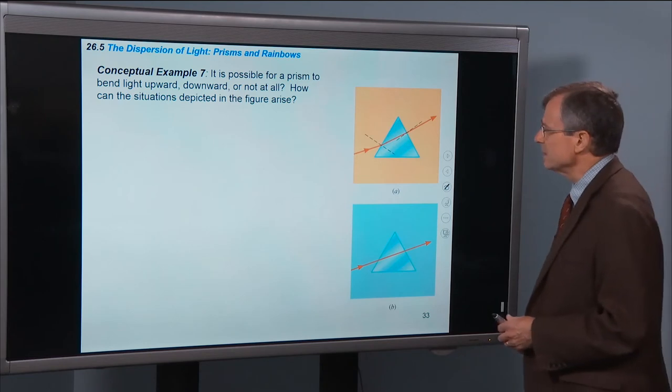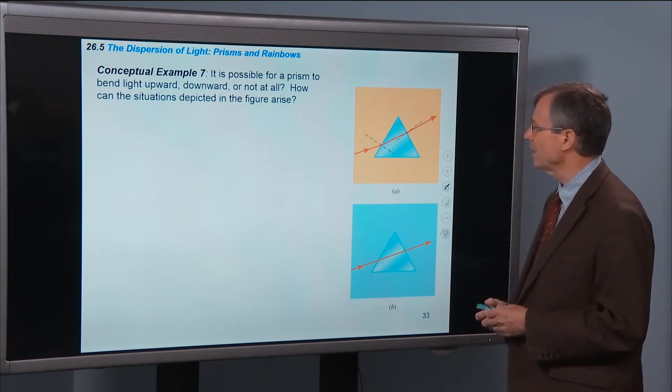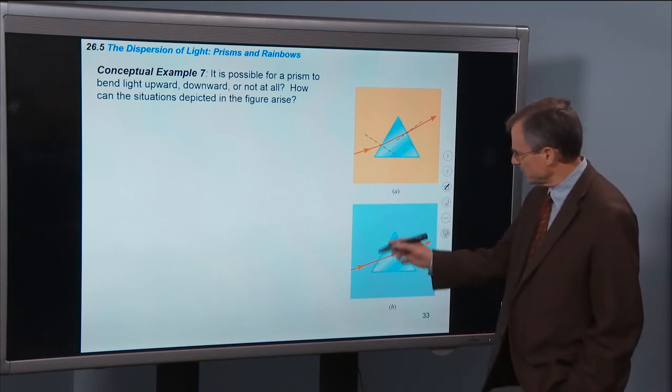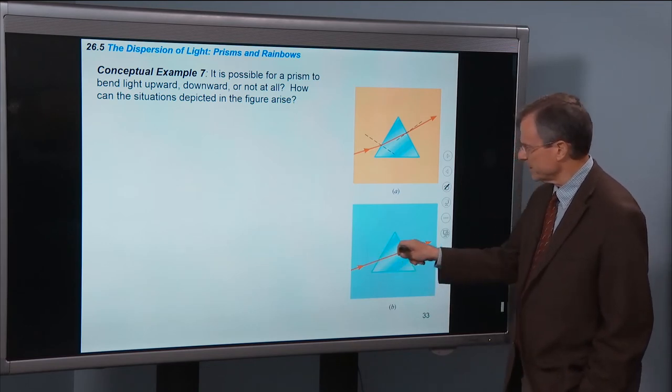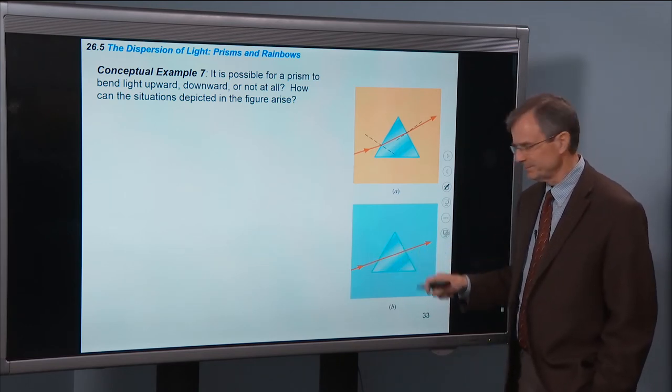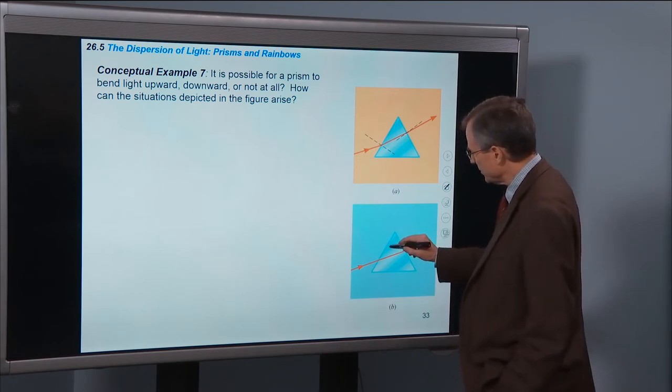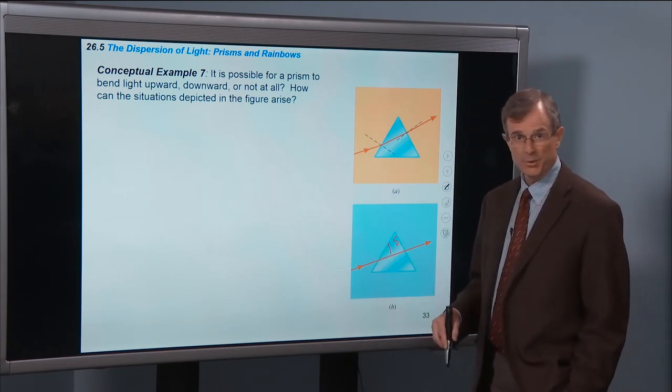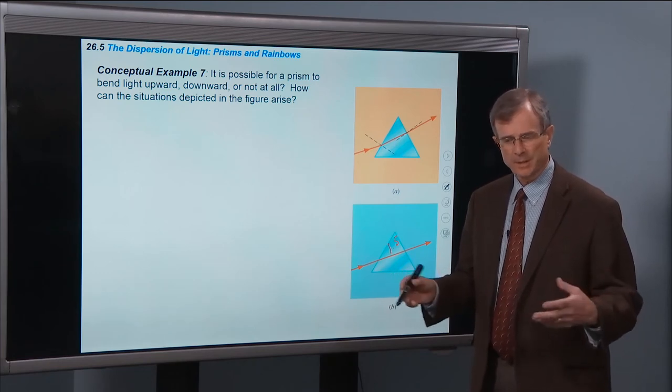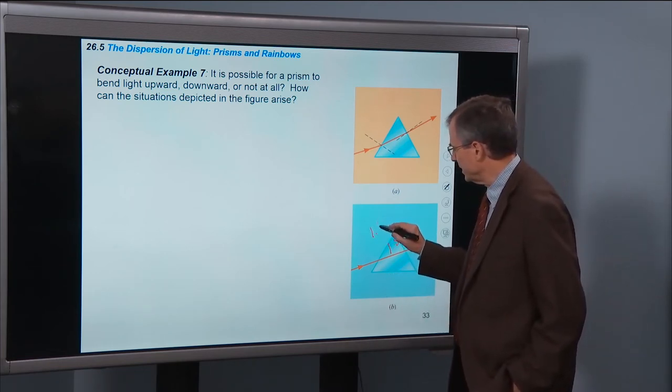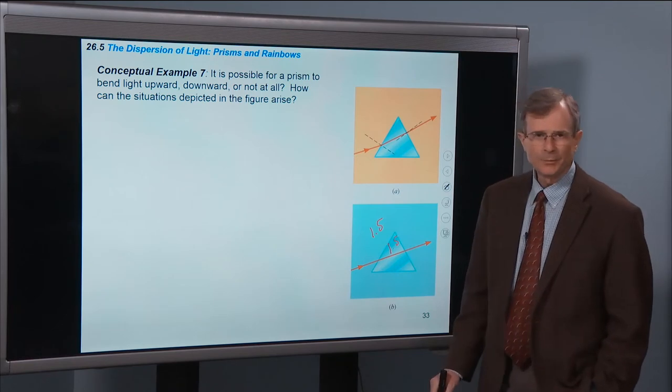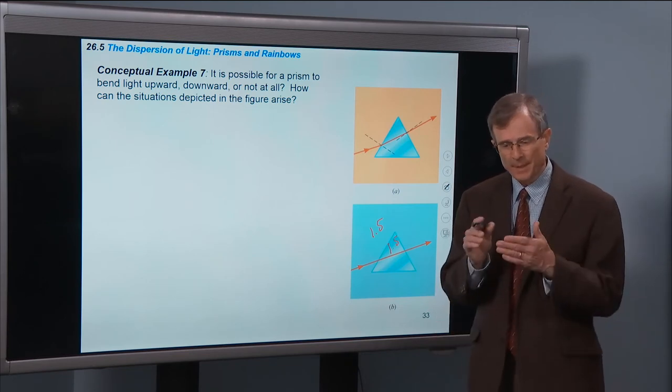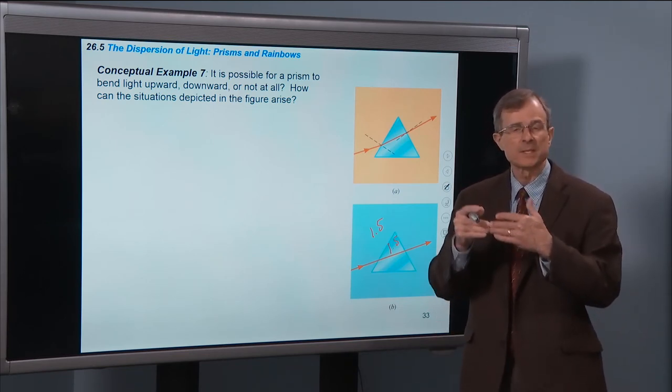So is it possible for a prism to bend light upward, downward, or not at all? And how can the situations depicted in the figure arise? What about this situation here? Is it possible for that prism not to bend that ray at all? And the short answer is if the index of refraction of the material is say 1.5 for glass, if you embed that prism in another material such as some liquid, and if that material has an index of refraction of 1.5, it won't bend at all. Because the index of refraction at the interface is the same on either side of the interface.